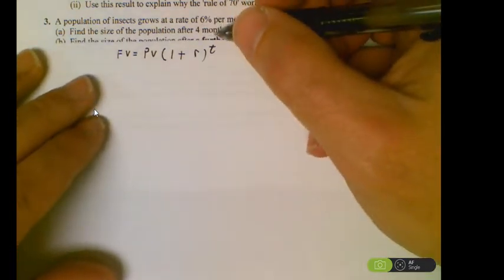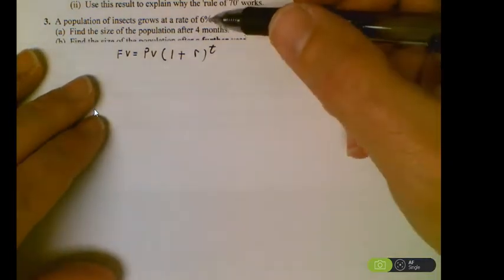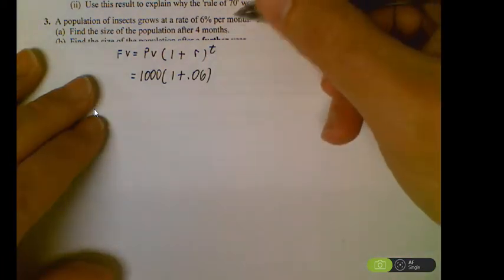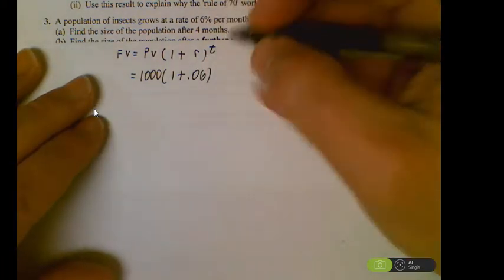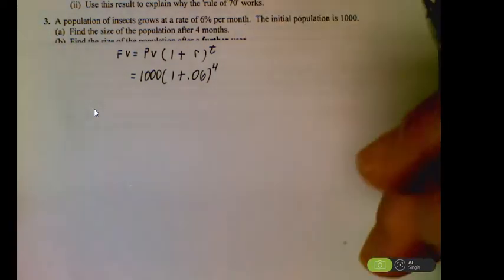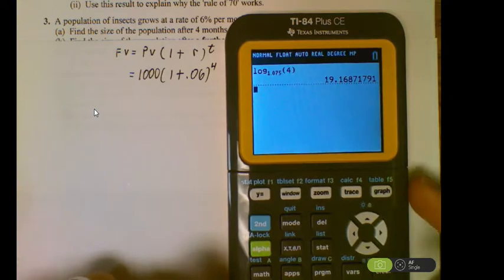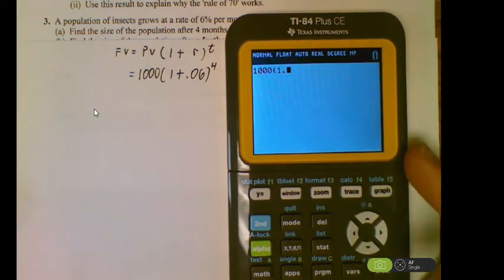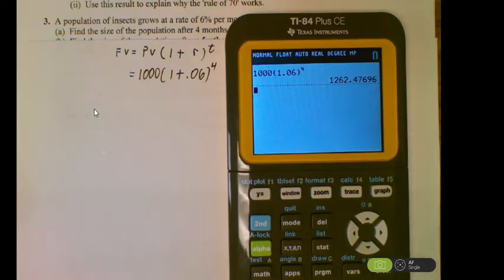Find the size of the population after 4 months. So we've got 4 periods of time, 6% per month, starting with the present value of 1,000. We've got 1 plus the rate, and since time is in months, 4 months gives us an exponent of 4. So we just throw that into the calculator. We're looking at 1,000 times 1.06 raised to the 4th power.